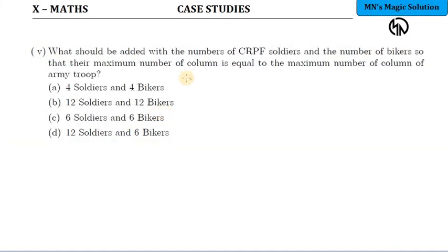So next question, it's the opposite. What should be added with the number of CRPF soldiers and the bikers? So soldiers and bikers numbers, how many people should be added extra, so that maximum number of columns will be equal to maximum number of columns of army troop. So maximum number of columns of army troop is 16. So for them also to organize in 16, 16 columns, extra how many people to add?